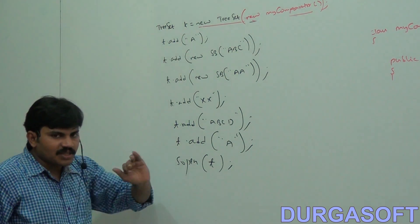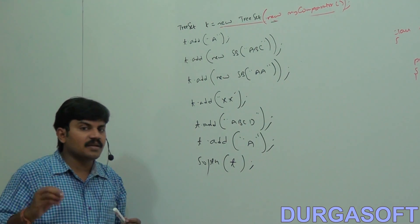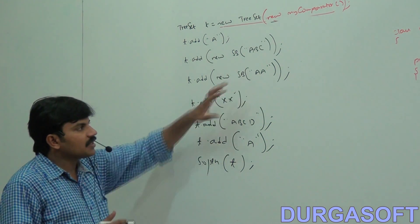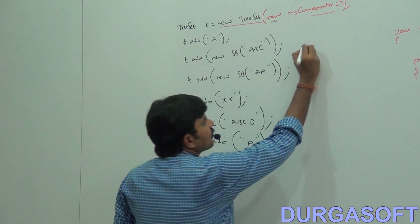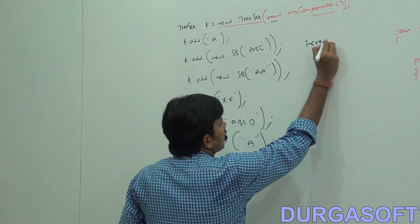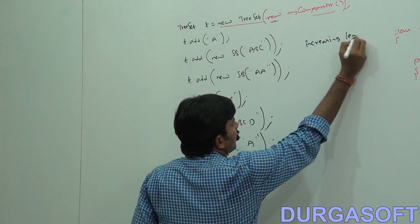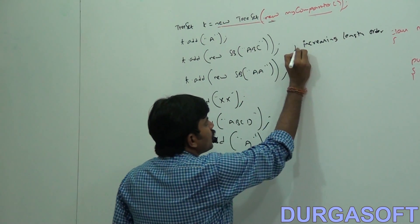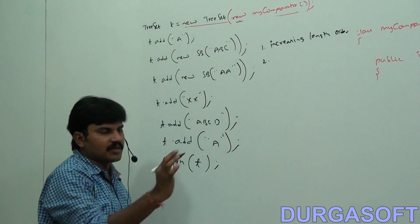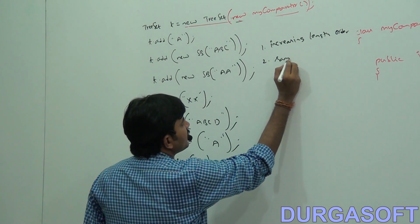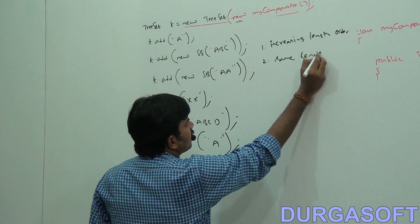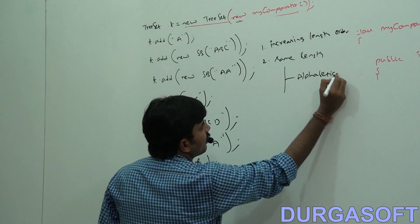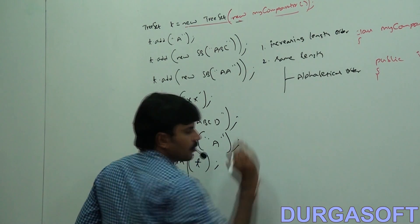If two objects are of the same length, then consider their alphabetical order. So we have only two rules: sorting order is increasing length order, and if two objects are of the same length, then consider their alphabetical order. That is our requirement.